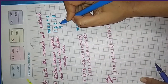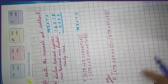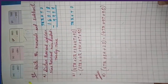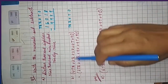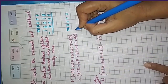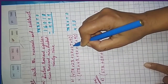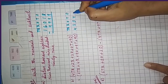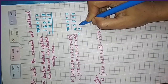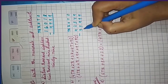Now do the subtraction. For the second question, the numbers are written in expanded form: four ten-thousands plus two thousands plus three hundreds plus four tens plus nine ones, minus three ten-thousands plus four thousands plus nine hundreds plus nine tens plus nine ones. You write each part in its proper place value column.